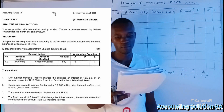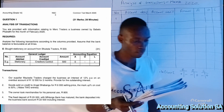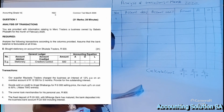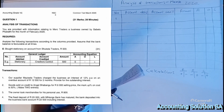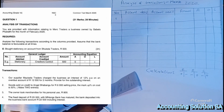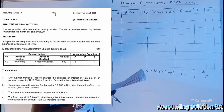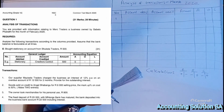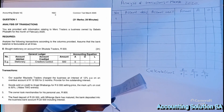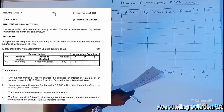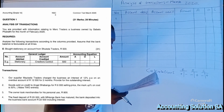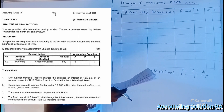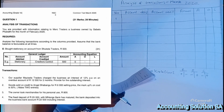We are provided with information relating to Mass Traders, a business owned by Savello Pacati, for the month of February 2022. We are required to analyze the following transactions according to the columns provided, assuming the bank balance is favorable at all times. For example, buying stationery on account from Sukela Traders for R500 — the general ledger account debited is Stationery and the account credited is Creditors Control, with an amount of R500.